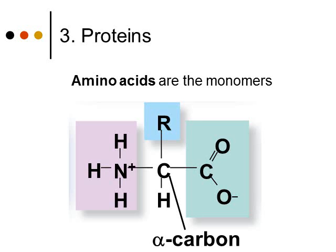This is showing the structure of a generic amino acid. You have a carbon atom in the middle. There's a carboxyl group to the right — a carboxyl group is one of those functional groups. To the left, we have another functional group called an amine, which has a nitrogen and three hydrogens. At the bottom you have a hydrogen, and at the top there's a little R, and that R part is going to be different because there are 20 different amino acids.